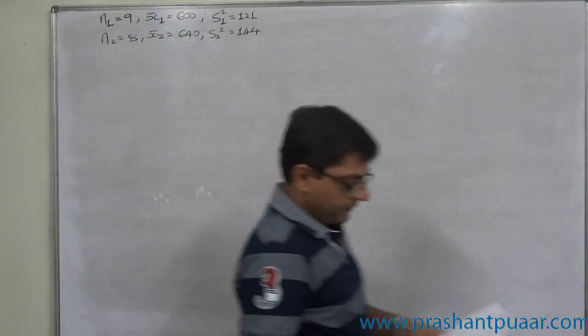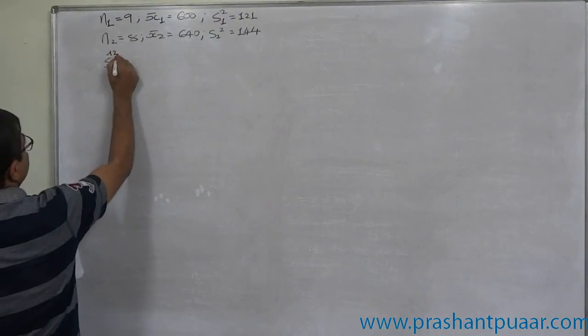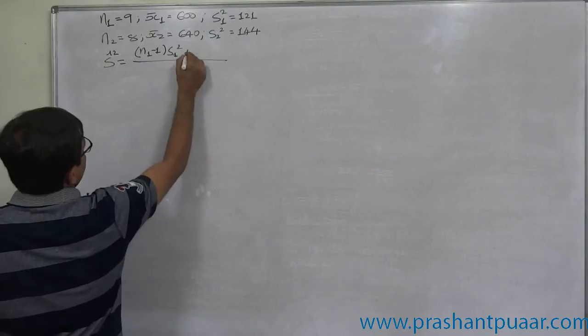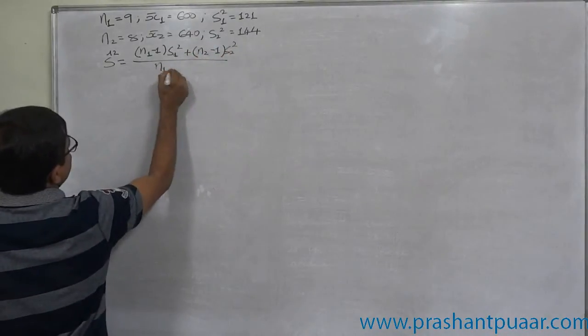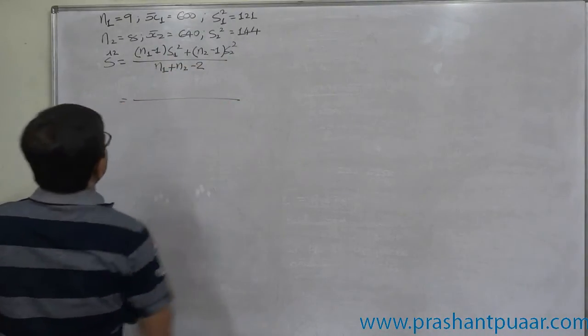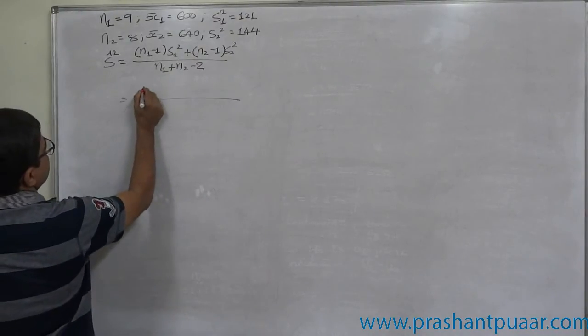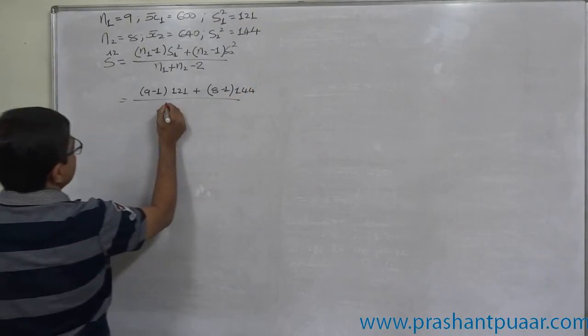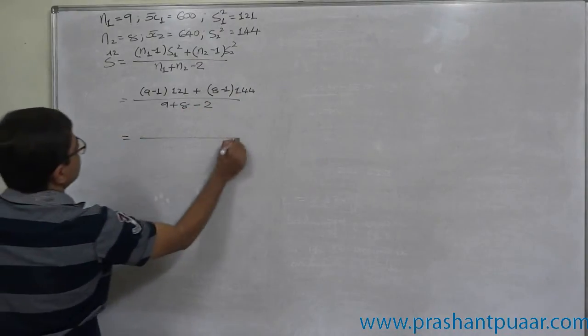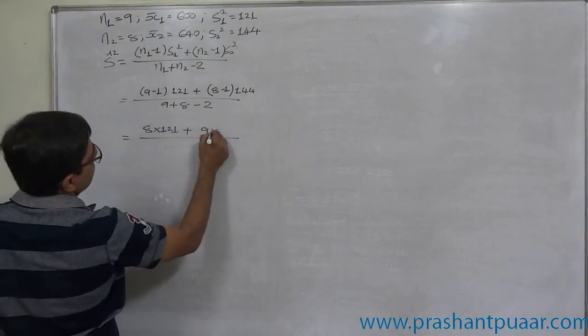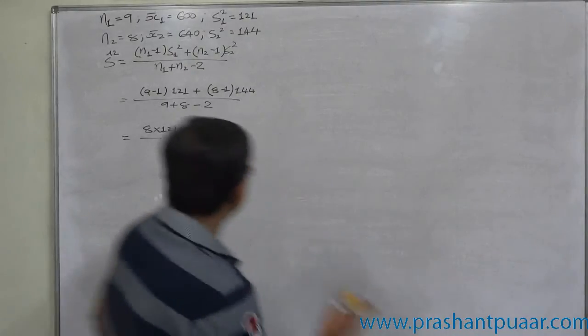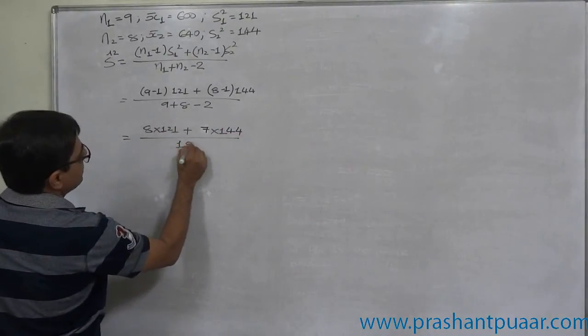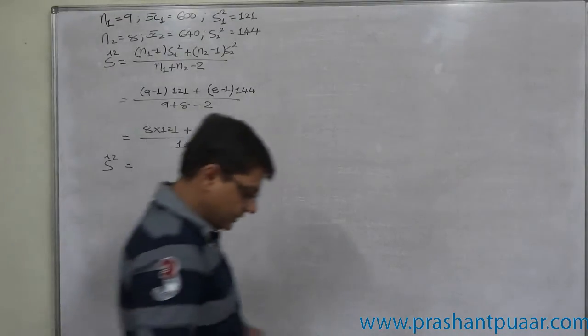No information about the level of significance. No hypothesis is readily available, but before that we have to calculate s² pooled. We will have to use the formula: (n₁-1)s₁² + (n₂-1)s₂² / (n₁+n₂-2). That is (9-1)×121 + (8-1)×144 divided by 9+8-2. That means 8×121 plus 7×144, 9+8=17 minus 2, that means 15. Simplify and get the final answer.